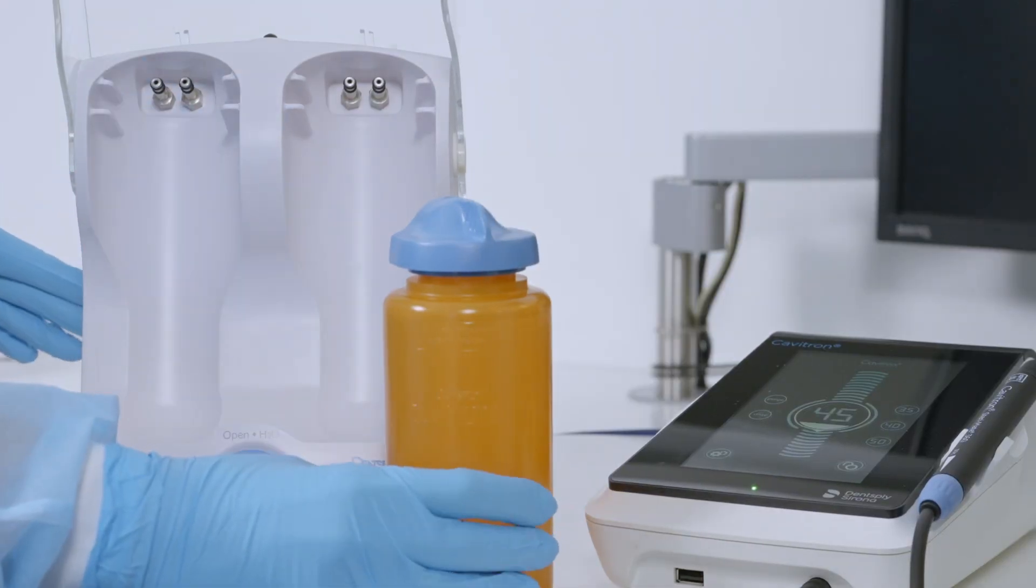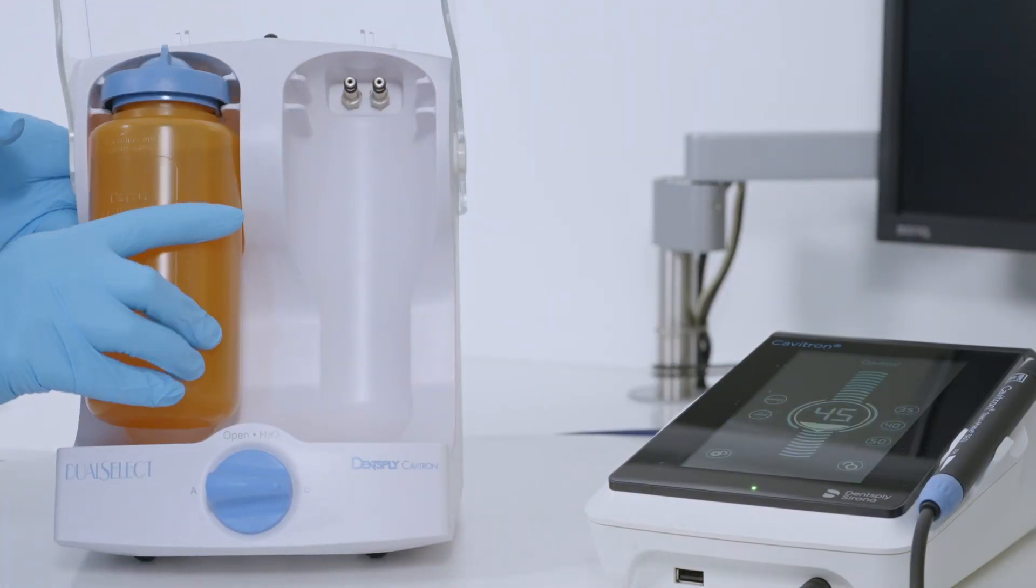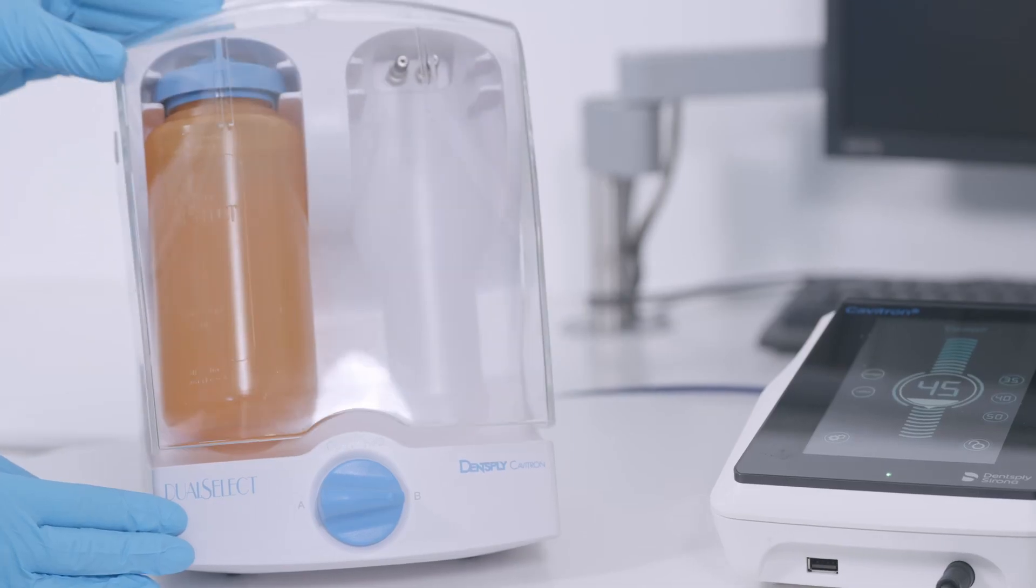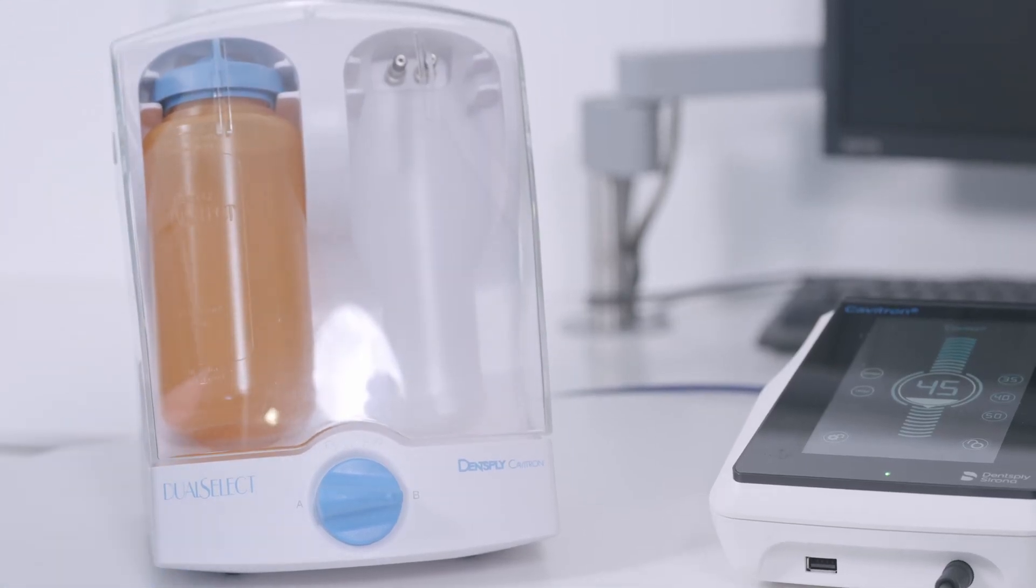Place the orange disinfectant bottle in position A, close the shield, and set the selector knob to position A.